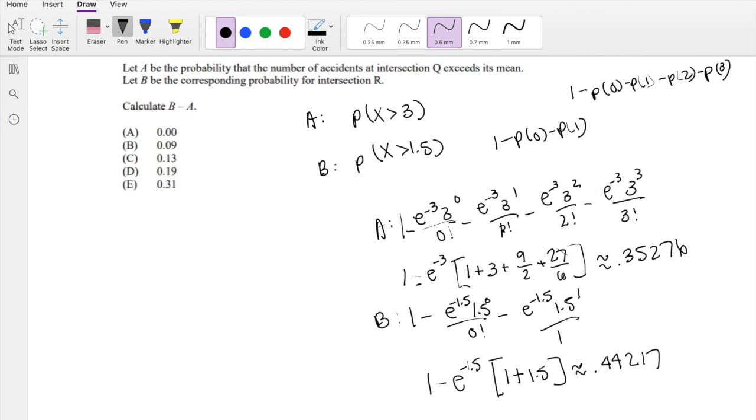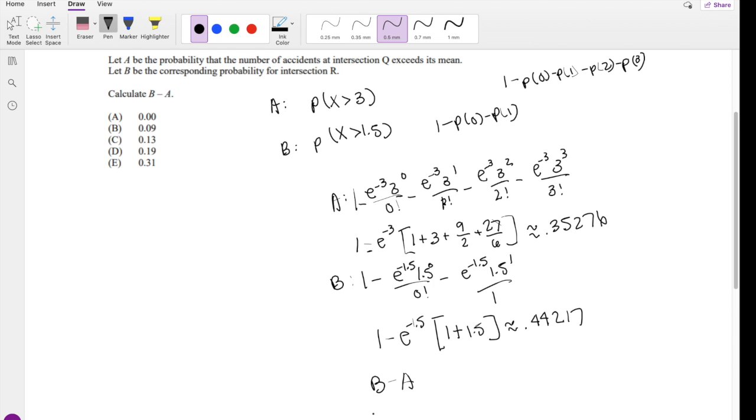When we find B minus A, that's 0.44217 minus 0.35276, which is approximately equal to 0.089, which is approximately equal to 0.09, which is our answer B.